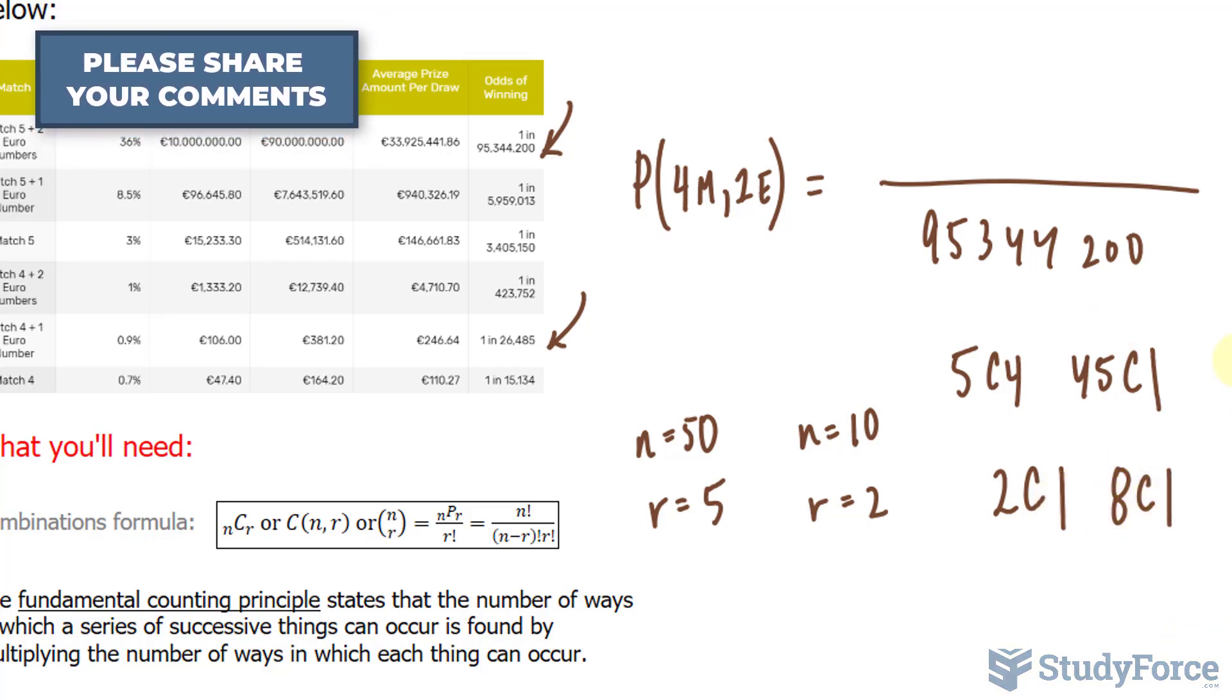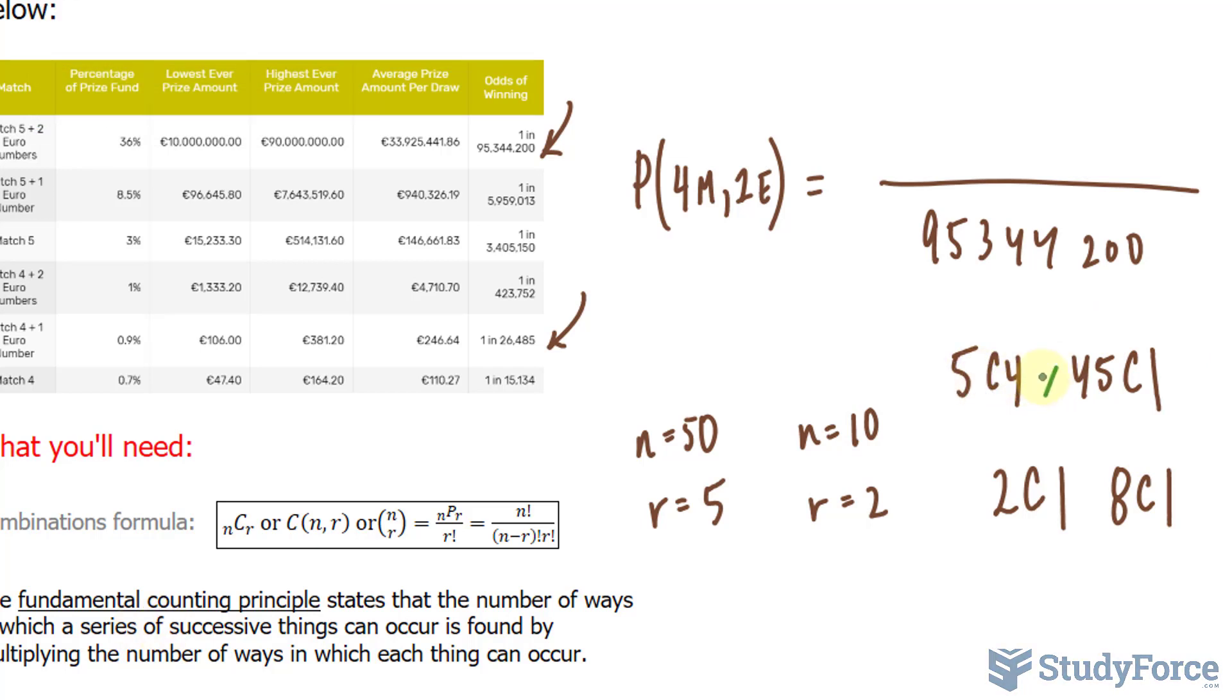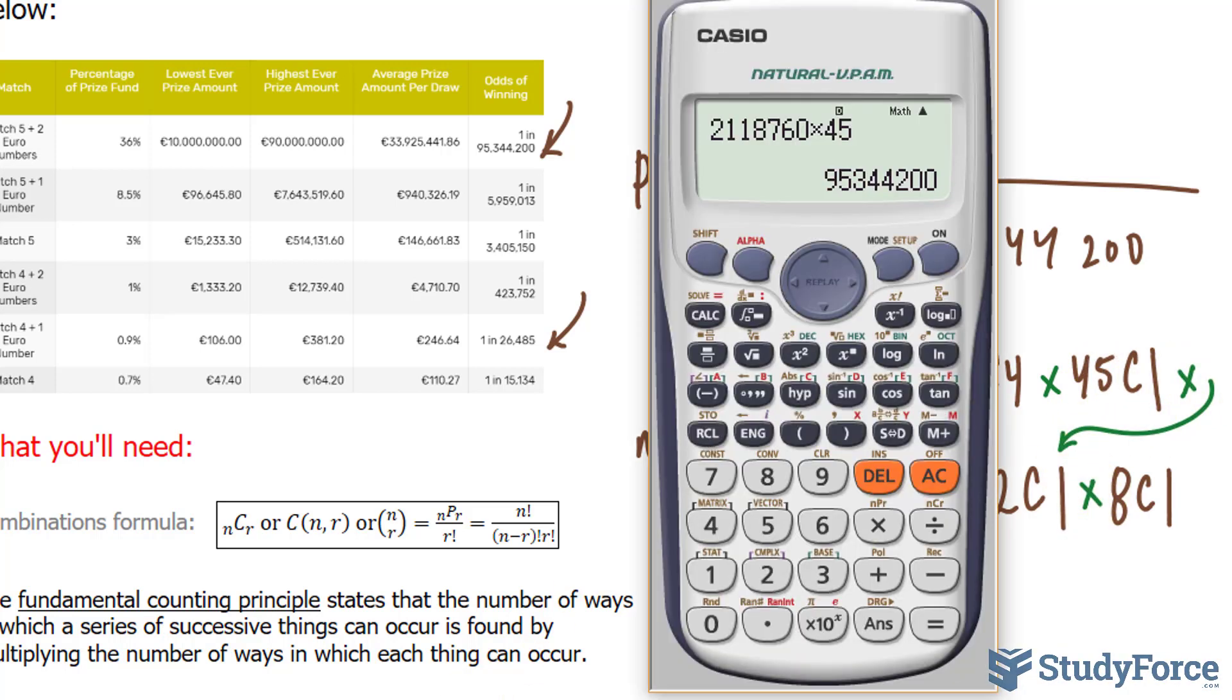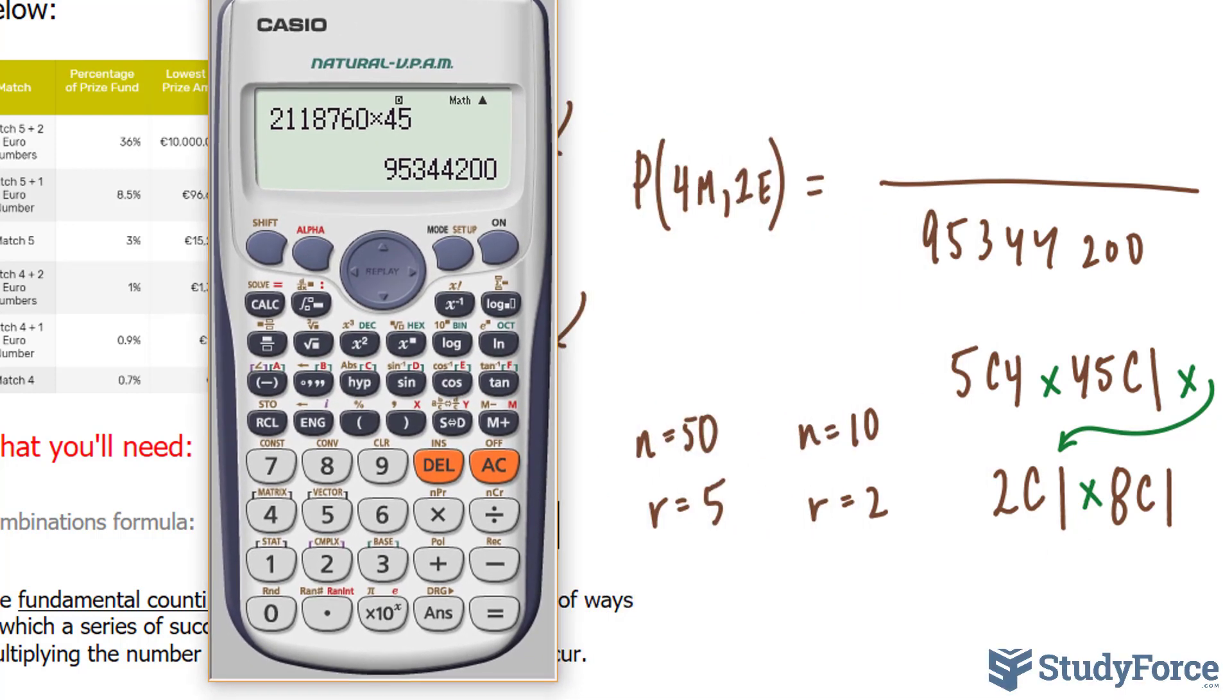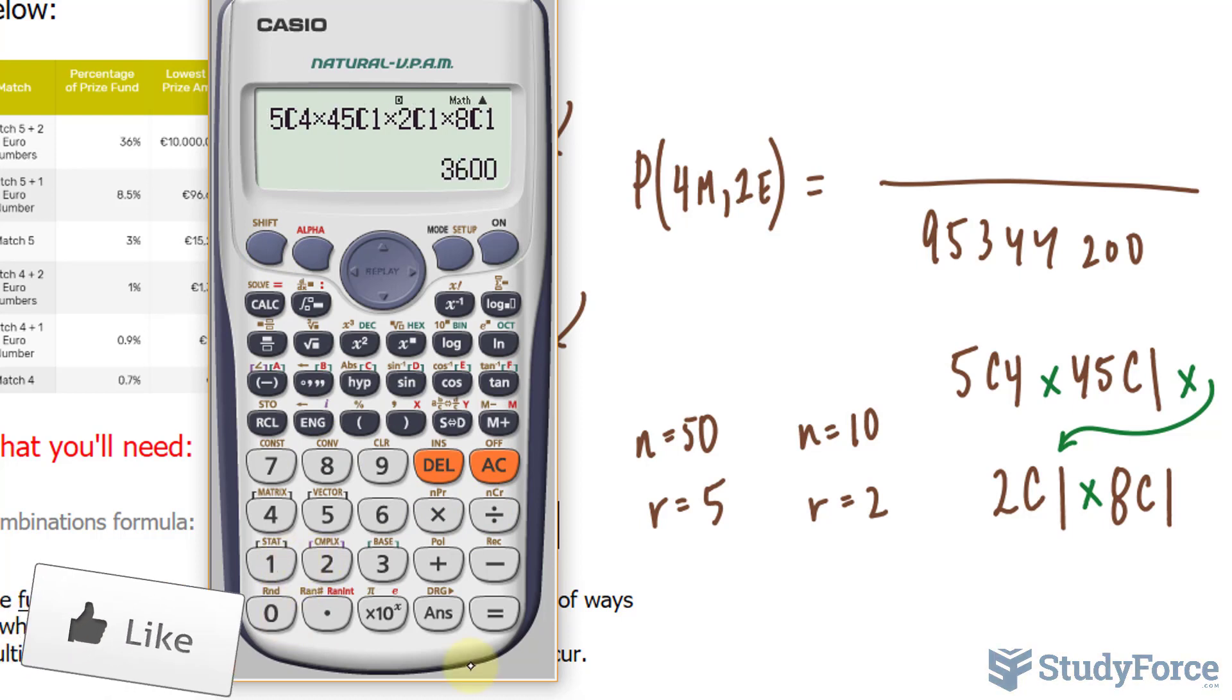Now, how do we combine all of these combinations? Well, once again, we use the fundamental counting principle where we multiply this number, to this number, to that number, and then to that number. So, let's go ahead and do that. We have 5, choose 4, times 45, choose 1, times 2, choose 1, times 8, choose 1.